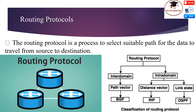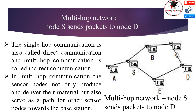In most WSN applications, the coverage area is so large that it requires thousands of nodes to be placed. This scenario requires multi-hop channels because most sensor nodes are too far from the sink node to communicate directly with the base station. Single-hop communication is also called direct communication, and multi-hop communication is called indirect communication.